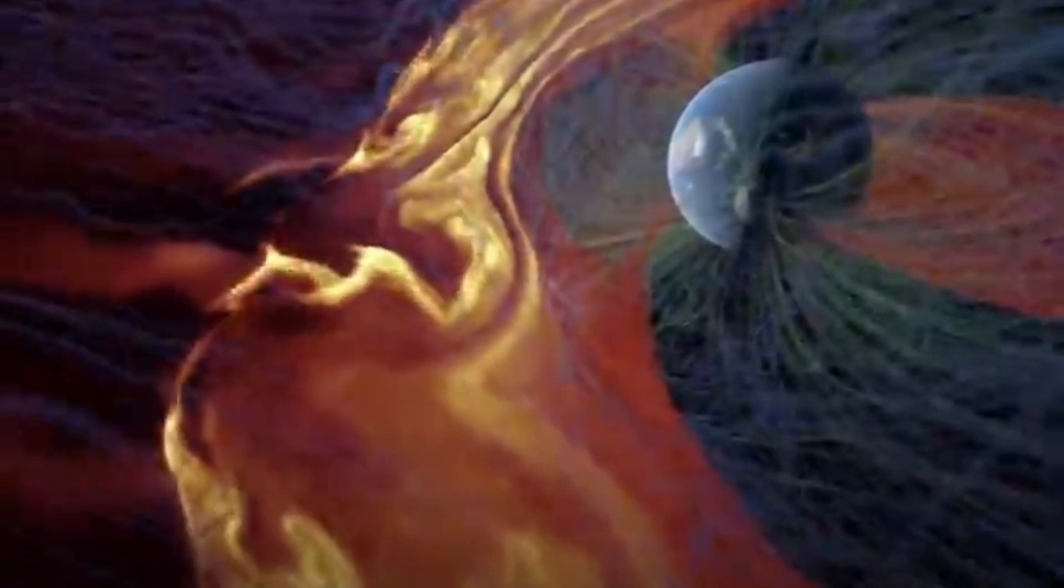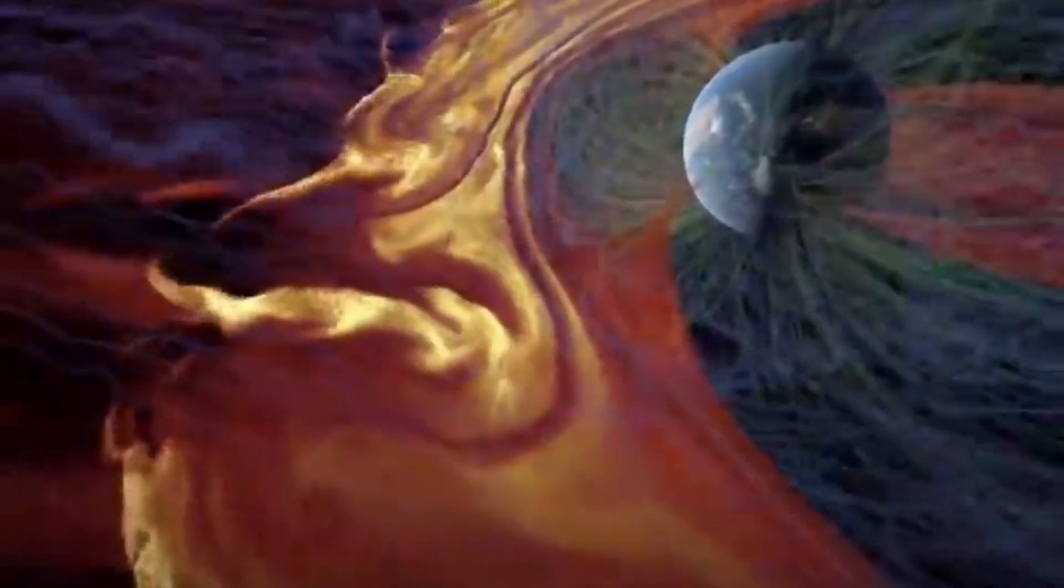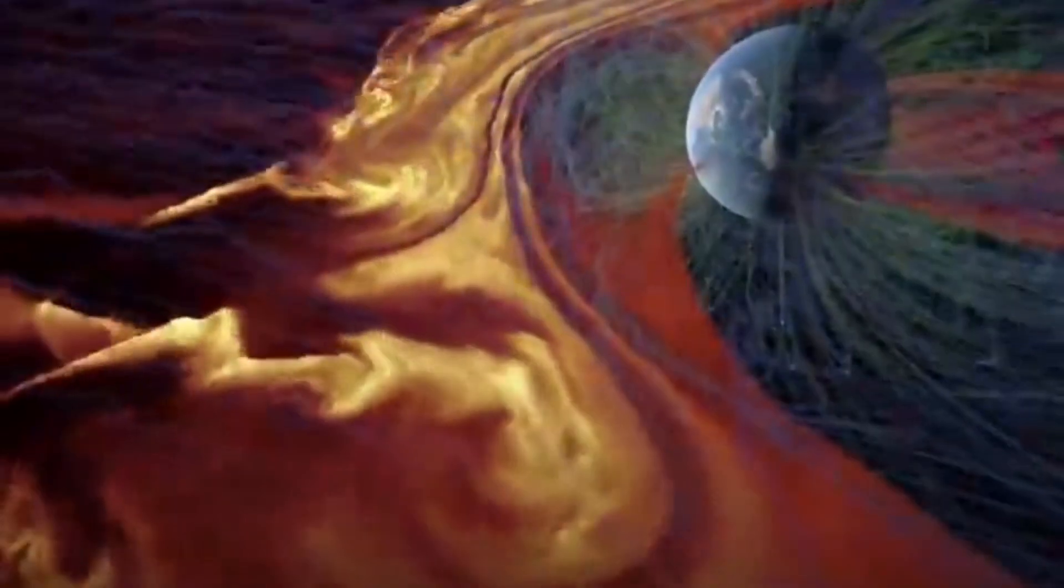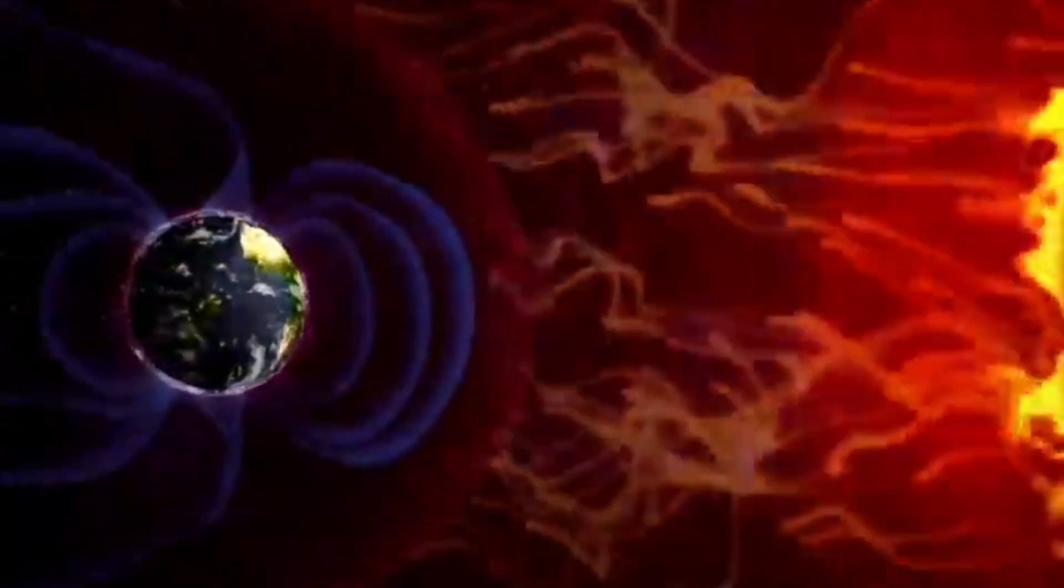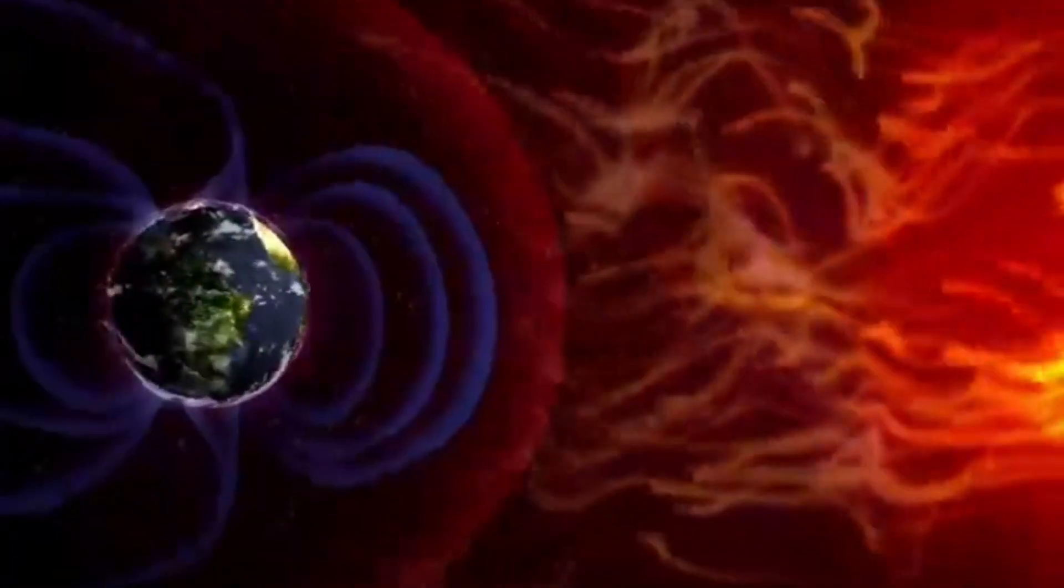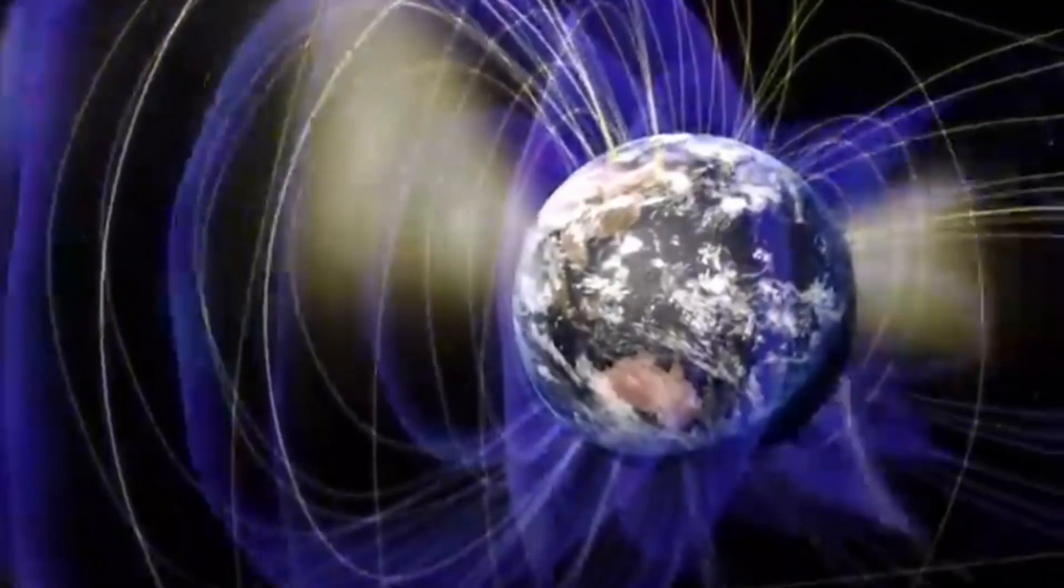Consider: magnetic field lines are closed continuous curves. The tangent at any point on the magnetic field lines gives the direction of the magnetic field at that point.